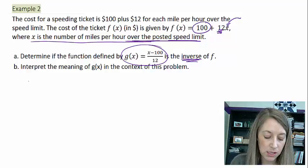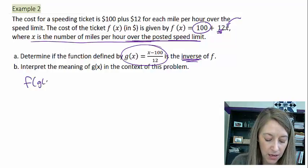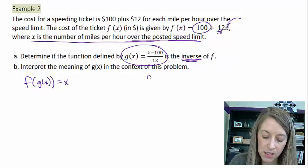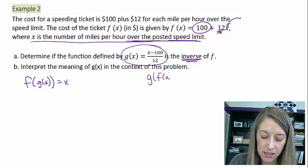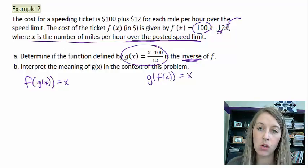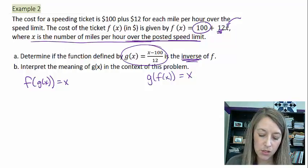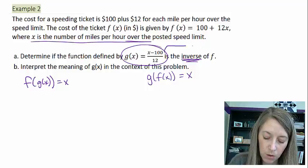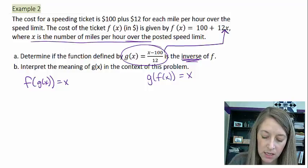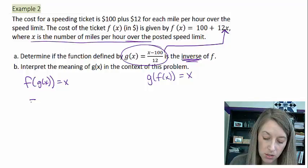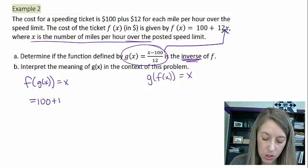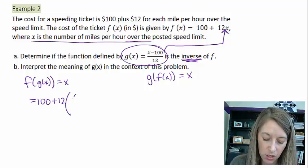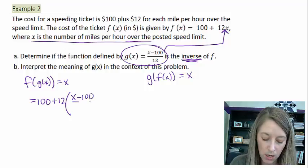So the way that we have to do this is we take f of g of x, show that that is equivalent to x, and vice versa, g of f of x, we need to show that that is also equivalent to x. So first, f of g, that means we take my g function and we plug it into all of the x's in my f function. So that is 100 plus 12 times my g function, x minus 100 over 12.